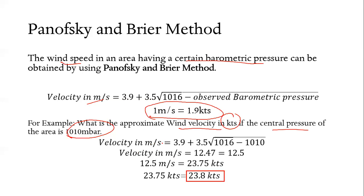Let's use the formula. Velocity in meter per second equals 3.9 plus 3.5 square root of 1016 minus 1010.